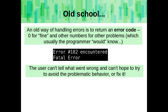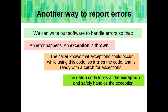An old way of handling errors is to return an error code — like zero for fine and other numbers for other problems — which usually the programmer would know but the user might not. So the user can't tell what went wrong. Instead, we can write our software so that when an error happens, an exception is thrown. The caller knows exceptions could occur, so it tries the code and is ready to catch exceptions, then its catch code safely handles that exception.